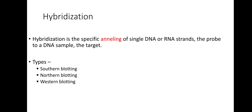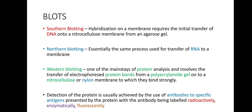Hybridization is the specific annealing of single DNA or RNA strands — the probe — to a DNA sample. Types include Southern blotting, Northern blotting, and Western blotting. Hybridization on a membrane requires the initial transfer of DNA onto a nitrocellulose membrane from an agarose gel. Northern blotting is essentially the same process used for transfer of RNA to membrane. Western blotting involves transfer of electrophoresed protein bands from a polyacrylamide gel onto nitrocellulose or nylon membrane. Detection of protein is usually achieved by use of antibodies to specific antigens presented by the protein, with the antibody being labeled radioactively, enzymatically, or fluorescently.